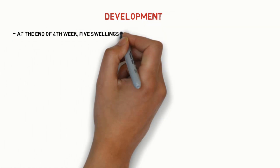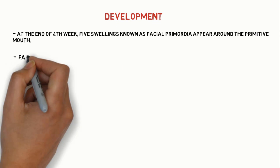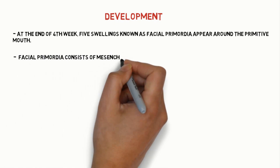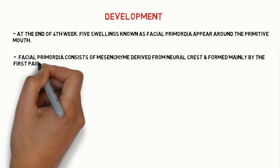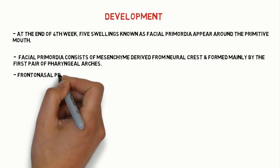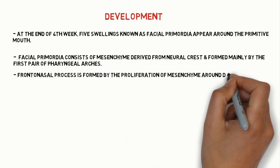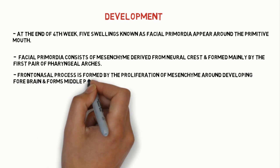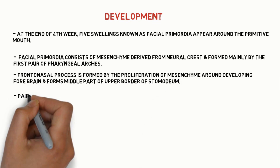Development of the face: at the end of the fourth week, five swellings known as facial primordia appear around the primitive mouth or stomodeum. Facial primordia consists of mesenchyme derived from neural crest and formed mainly by the first pair of pharyngeal arches. The frontal nasal process is formed by proliferation of mesenchyme around the developing forebrain and forms the middle part of the upper border of the stomodeum.